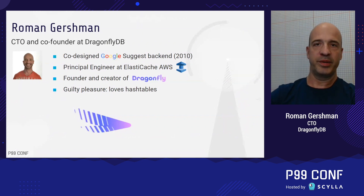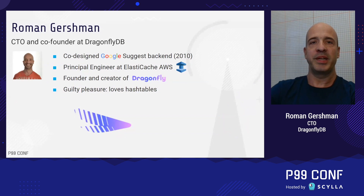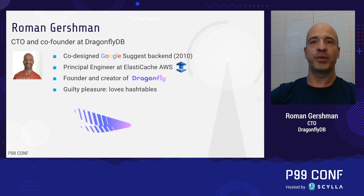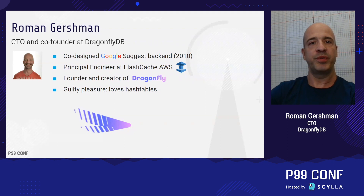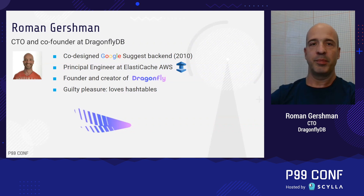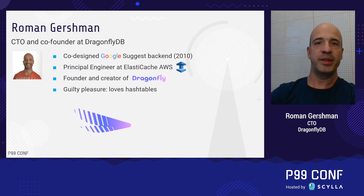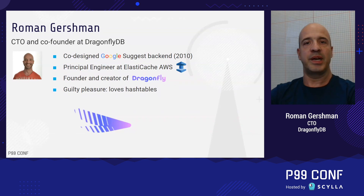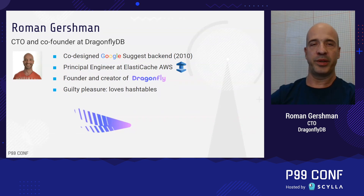So what is Dragonfly? Dragonfly is a modern replacement for memory stores like Redis and Memcached. It scales vertically on a single instance to support millions of requests per second. It is more memory efficient, has been designed with reliability in mind, and it includes a better caching design. But today I'm going to talk about how a unique hash table design helped Dragonfly bound its tail latency, and I'll discuss the tradeoffs along the way.